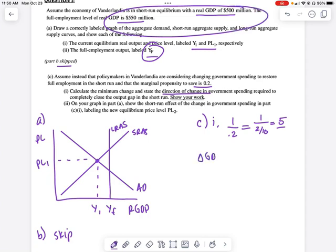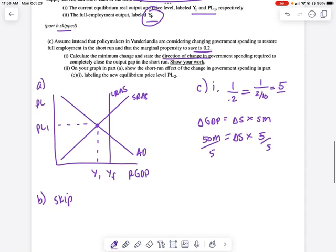So the change in GDP equals the change in spending times the spending multiplier. So 50 million equals the change in spending times 5. Hopefully you're feeling pretty confident in your ability to divide 50 by 5. And we'll see that 10 million is the change in spending.